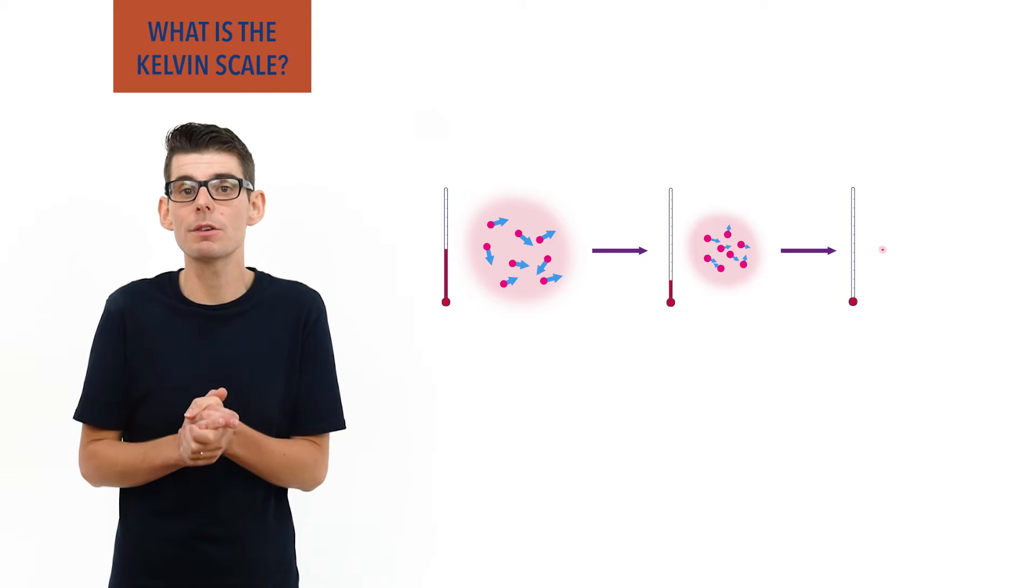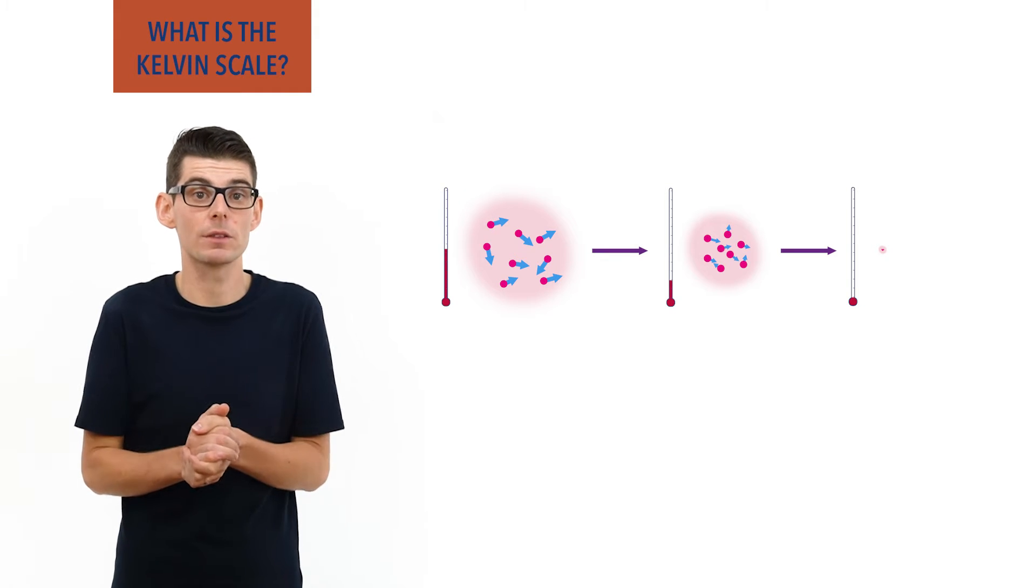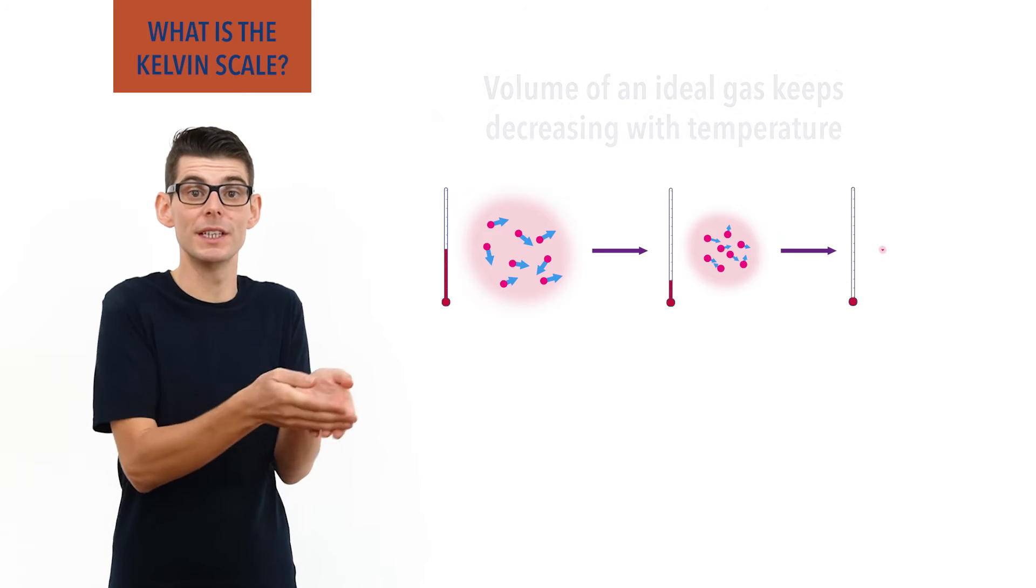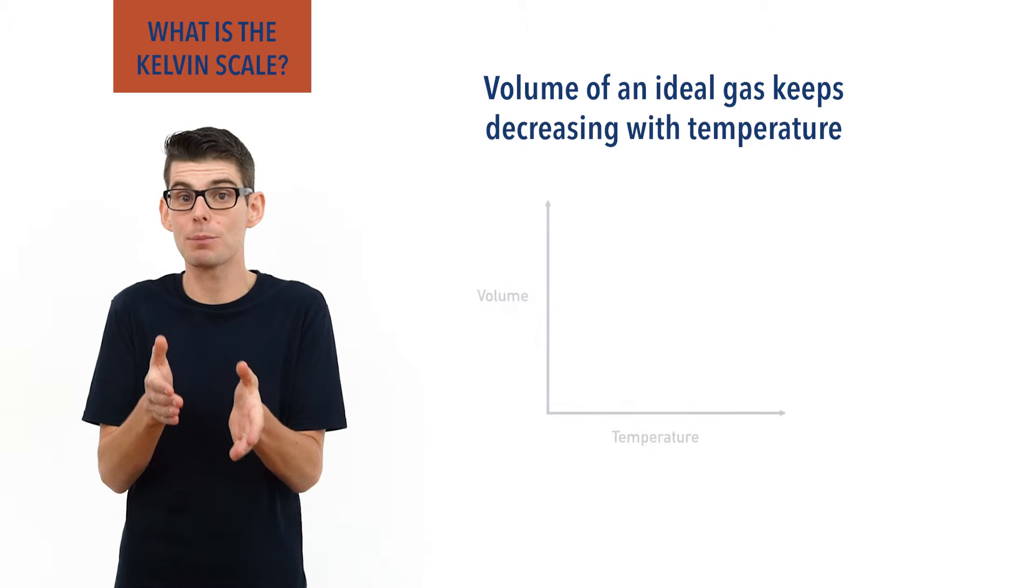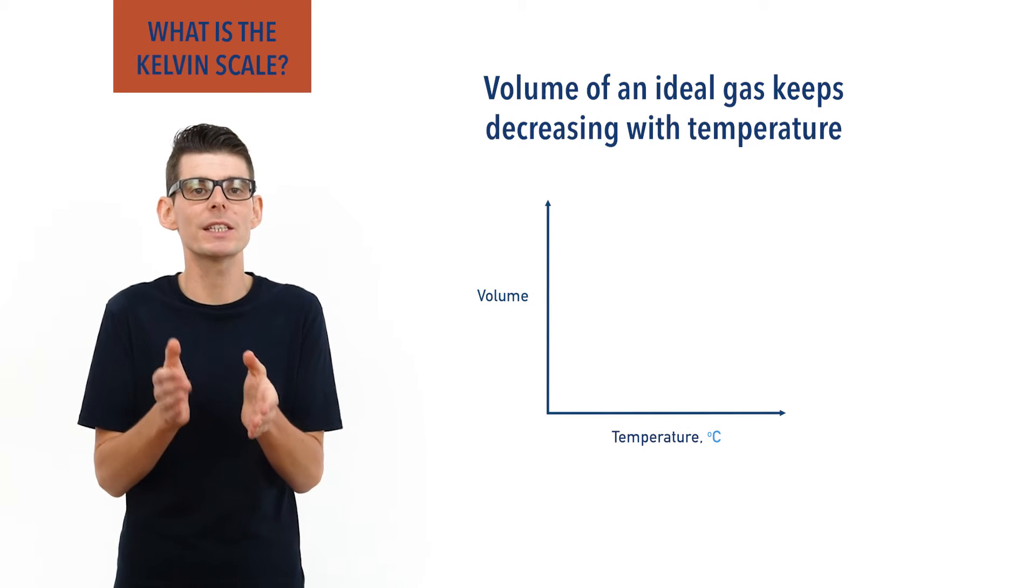We can see this when we decrease the temperature of an ideal gas, as its volume also decreases. If we plot this on a graph with temperature as degrees Celsius, we get a straight line.